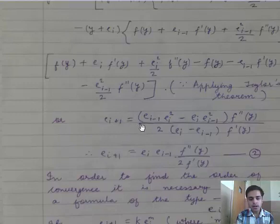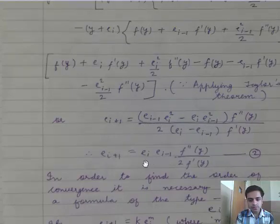Now the value of ei+1 is coming out to be after evaluating ei times ei-1 times f''(y) divided by 2f'(y). This is our second equation.